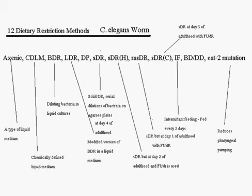There are 12 dietary restriction methods for the C. elegans worm. C. elegans is a good candidate for tests like this because it has a relatively short lifespan and its metabolic pathways are relatively simple, so it's not too confusing to work on.